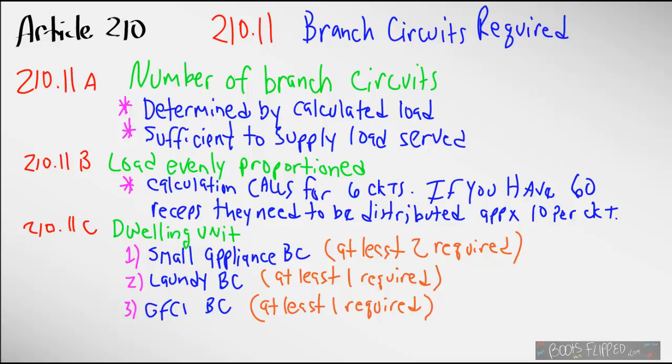We also have requirements in a dwelling unit that require us to, in 210.11C1, we have to have at least two small appliance branch circuits, and those are going to serve our countertops. And there are other places that those can serve besides the counter, and we will get into that later on in class. We also have to have a laundry branch circuit, and there's only one of those required, at least one. And then we have to have a GFCI branch circuit for our bathrooms. There's at least one of those required as well.